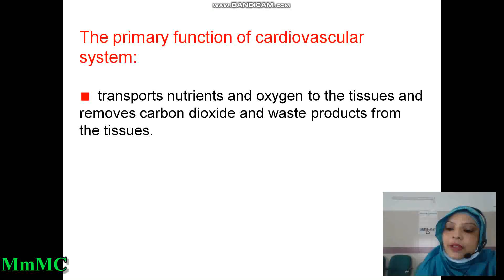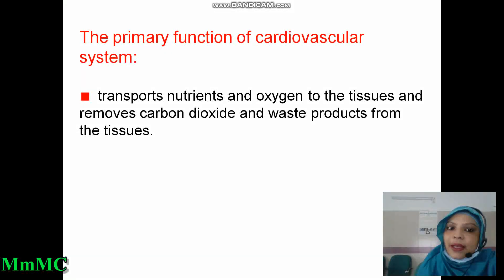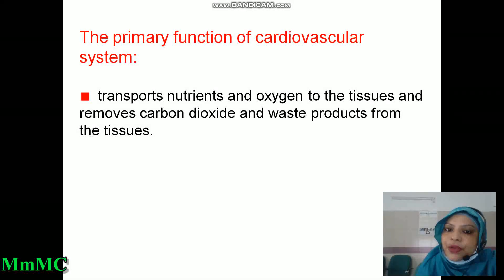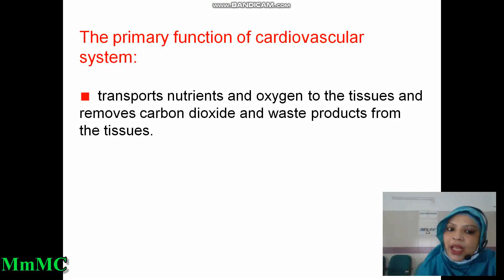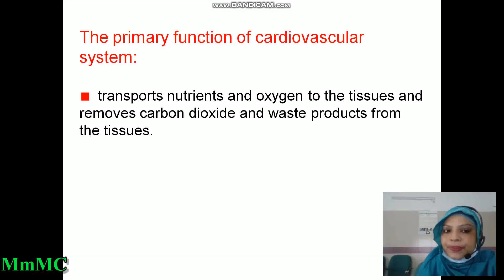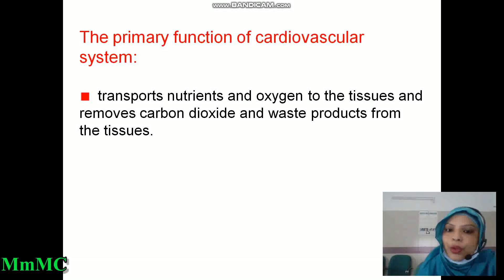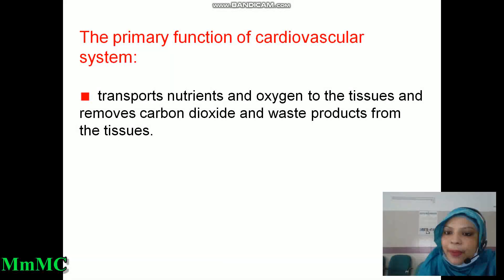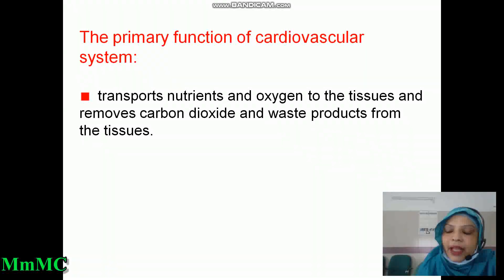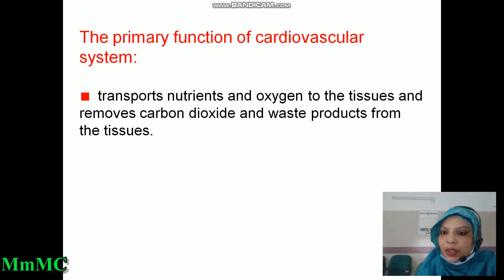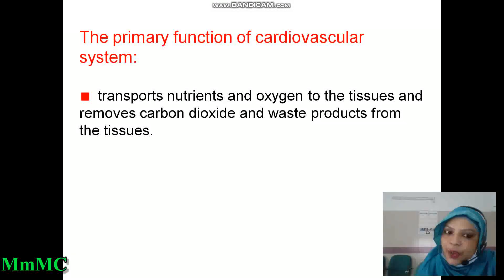The primary function of cardiovascular system is to transport nutrients and oxygen to the tissues and remove carbon dioxide and waste products from the tissues. We know that the heart always pumps 5 to 6 liters of blood per minute, and through this blood it transfers nutrients and oxygen to the tissues and removes carbon dioxide and waste products.